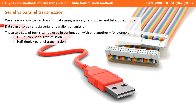Now that we know we can transmit data in simplex, full duplex, and half duplex mode, we also need to understand that data can be transmitted via serial or parallel. These two sets of terms can be used in conjunction — so for example, we could have a full duplex serial transmission or a half duplex parallel transmission.